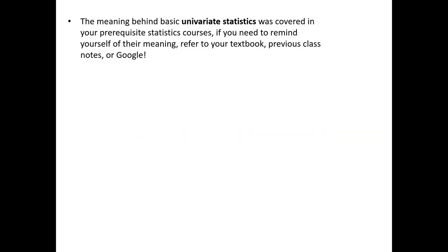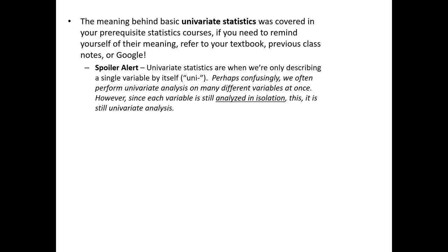The definition of a univariate statistic was covered in your prerequisite statistics courses, so we're not going to spend too much time on the intricate details of each one. If you need to know exactly what each univariate statistic is, simple Googling or referring to your previous notes will help guide you. But we'll cover some of the most basic ones as we move along. Broadly speaking, univariate statistical analysis is when we're only describing a single variable in our data set at a time — hence univariate.